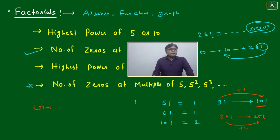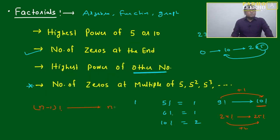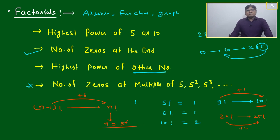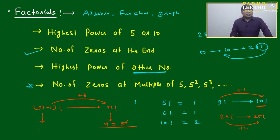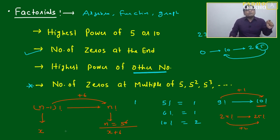In general, if you jump from (n−1) factorial to n factorial and the number of zeros increases by 6, it means n is a multiple of 5 to the power 6. This gives multiple ideas about numbers, their factors, and how they relate to the number of zeros. For example, if the zeros for some factorial are x, then for n factorial they become x + 6. If you ask how many numbers end with x+1, x+2, or x+3 zeros, you will not find any such number.